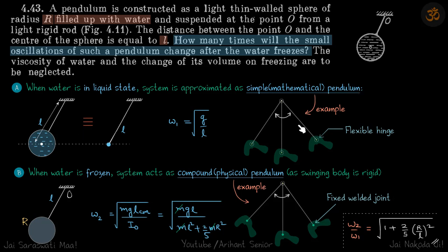Let's say we have this body that is connected by a rod about this point, and this joint is a flexible hinge. This body is just undergoing translational motion.